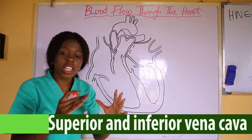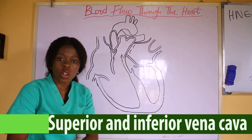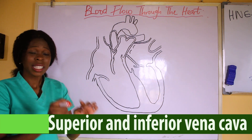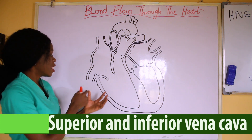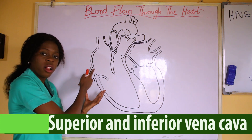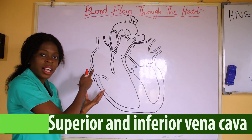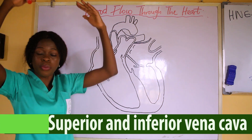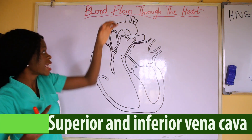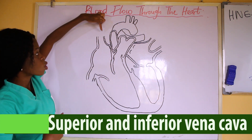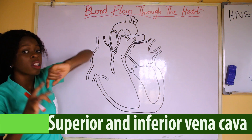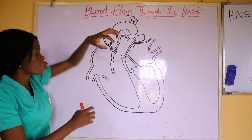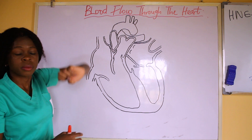Deoxygenated blood from the lower extremities — that's your legs and your abdominal region — enters the heart through the inferior vena cava, while deoxygenated blood from the upper extremities enters through the superior vena cava. When it enters, it goes to the right atrium.